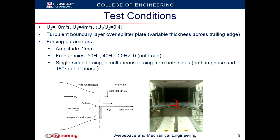The forcing parameters: the amplitude, which is the amount we displace the flap, is fixed at 2 mm. The frequencies used were determined from 2D experiments for direct comparison. Additionally, we forced from a single side and also the other side, controlling the phase between perturbations to understand vortex interactions in the center and the effect on the growth of the mixing layer downstream.